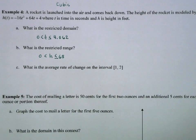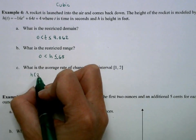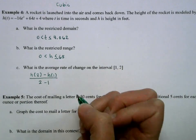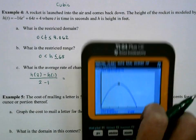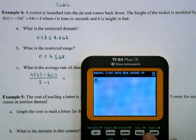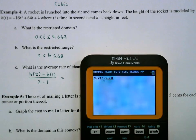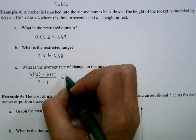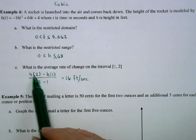Next, average rate of change. The formula is [f(b) − f(a)] / (b − a), which in this case is [H(2) − H(1)] / (2 − 1). Both values are in the domain. Using the calculator with Y1 already stored, I compute [Y1(2) − Y1(1)] / (2 − 1), which equals 16. The units are feet per second — whatever units are on top over whatever units are on the bottom.